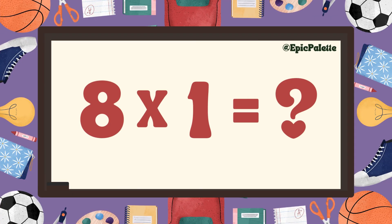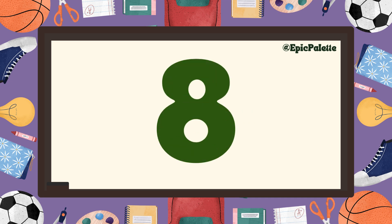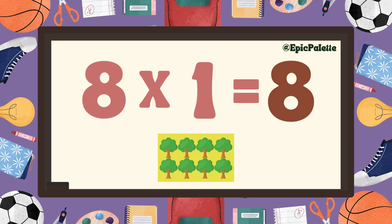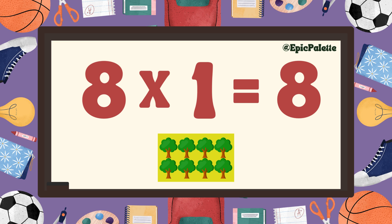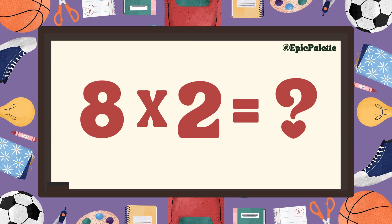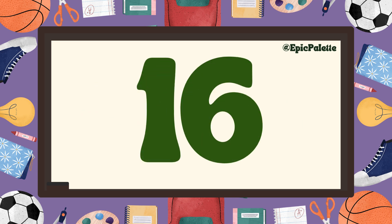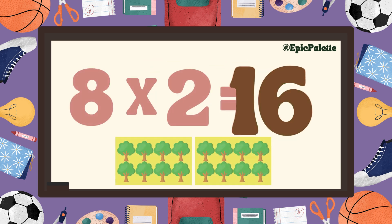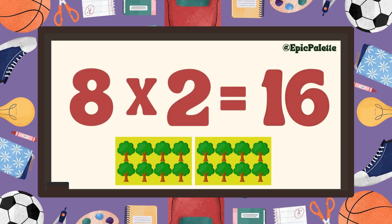Eight times one equals... Eight. That's right. Eight times one equals eight. Eight times two equals... Sixteen. That's right. Eight times two equals sixteen. Excellent.